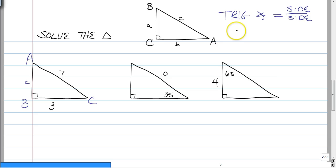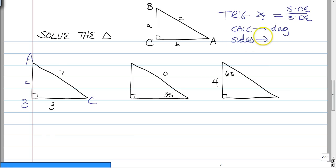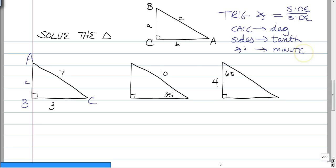Remember, your calculator always needs to be in degrees. And rounding — we're going to say that sides will get rounded to the nearest tenth, and angles get rounded to the nearest minute. A minute is just a more accurate way to round angle measures, and we will have a nice little discussion about minutes in the classroom.